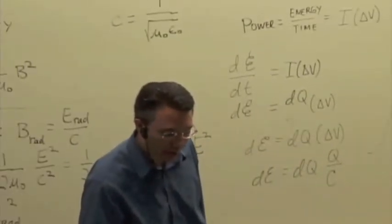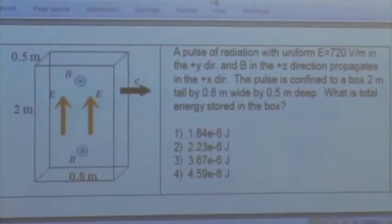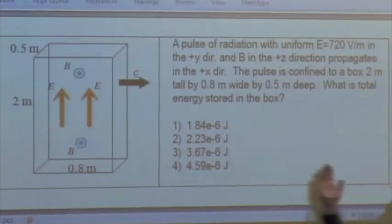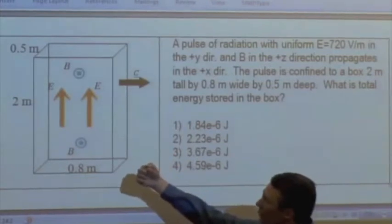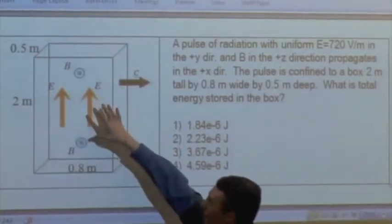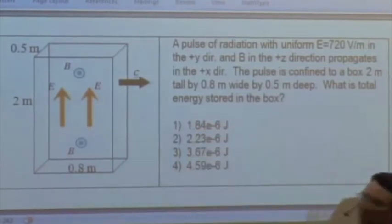So let's just try a quick question using this. Let's say we have a pulse of radiation, kind of like the first thing we saw when we introduced radiation, where we had this slab of field, electric field pointing upward, magnetic field pointing out towards us. And let's say we've confined it to just a box or a volume that's propagating to the right at the speed of light.